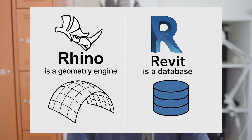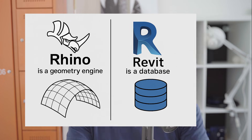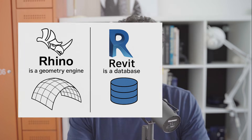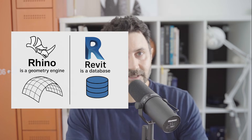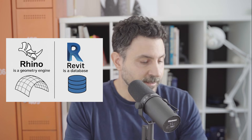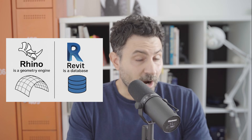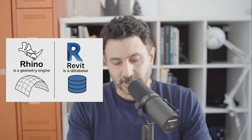Rhino is a geometry engine. Revit is a database. Rhino is a geometry engine. Revit is a database.